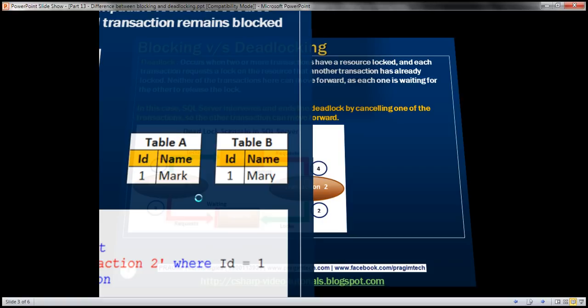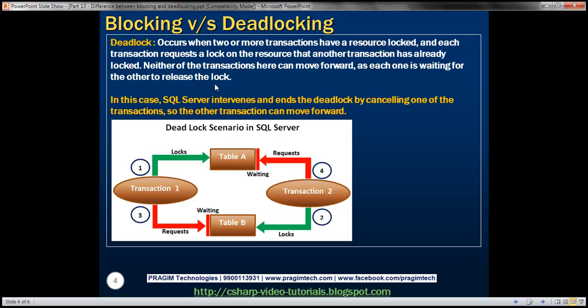Now let's look at when a deadlock occurs. Deadlock occurs when two or more transactions have a resource locked and each transaction requires a lock on the resource that another transaction has already locked. Neither of the transactions can move forward as each one is waiting for the other to release the lock. In this case, SQL Server intervenes and ends the deadlock by cancelling one of the transactions so the other transaction can move forward.